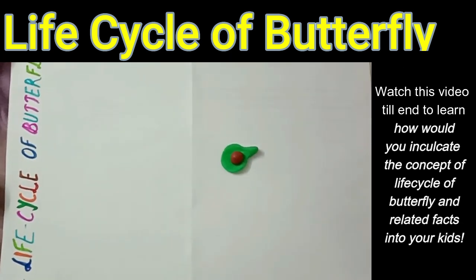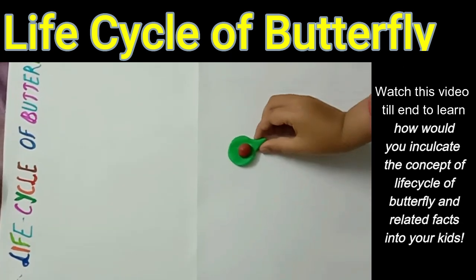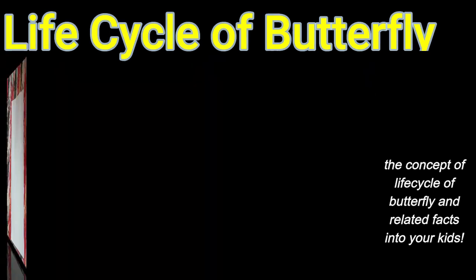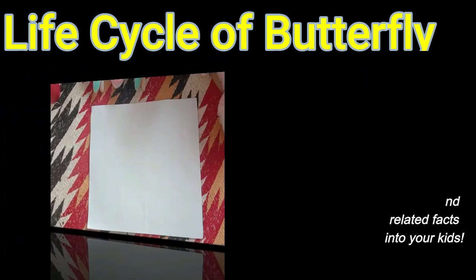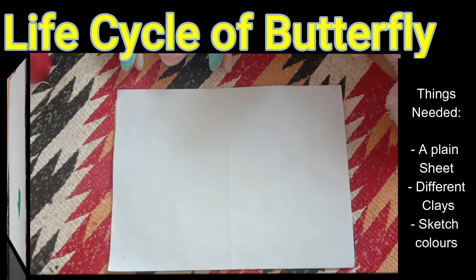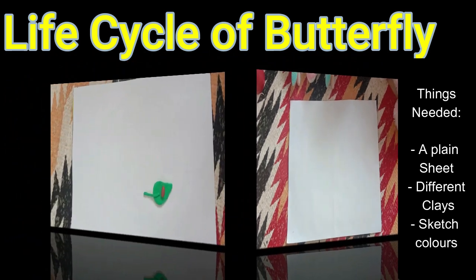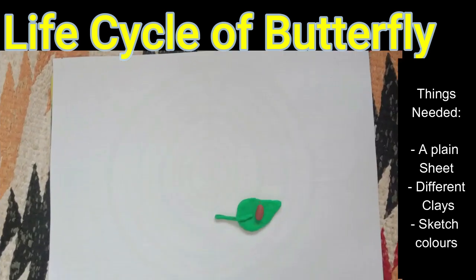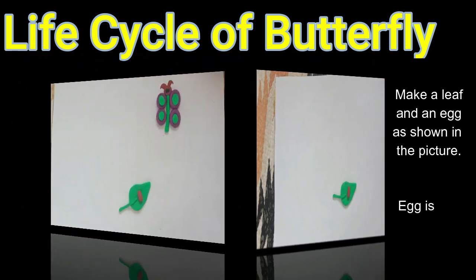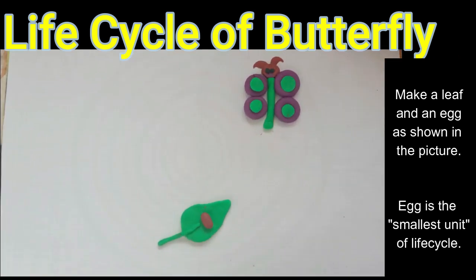So, let us begin. First, we will make a leaf and a small egg using the clay. We begin with the egg in the life cycle of the butterfly, because the egg is the smallest unit of the life cycle.